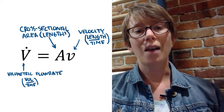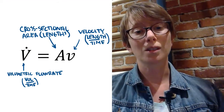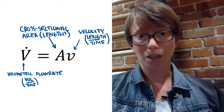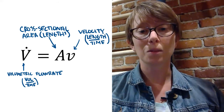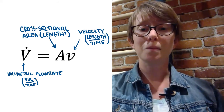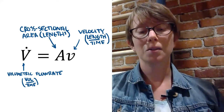When thinking about volumetric flow rates, it's also useful to remember something called the continuity equation. This equation relates the average velocity of the fluid to the volumetric flow rate by using the cross-sectional area of the pipe or conduit. So we have V-dot equals A times V. In this equation, V-dot is the volumetric flow rate (e.g., meters cubed per second), A is the cross-sectional area in meters squared, and V is the average velocity of the fluid in meters per second. So if you're given the dimensions of a pipe and the average velocity of the fluid, you can calculate the volumetric flow rate using this continuity equation.